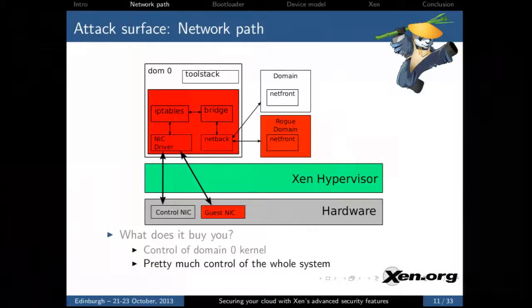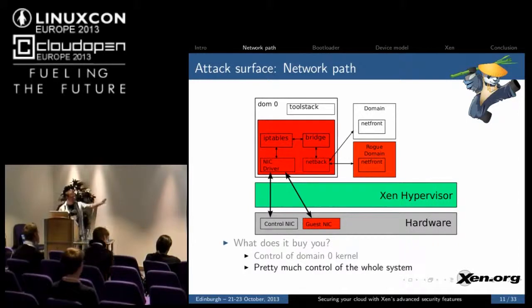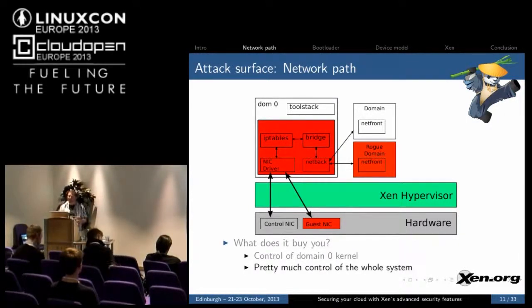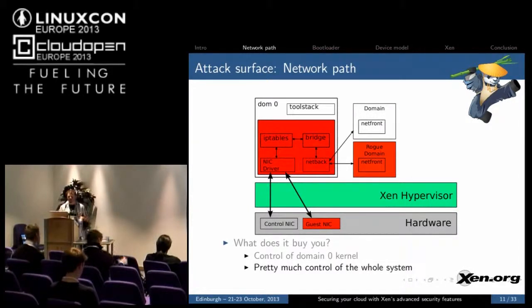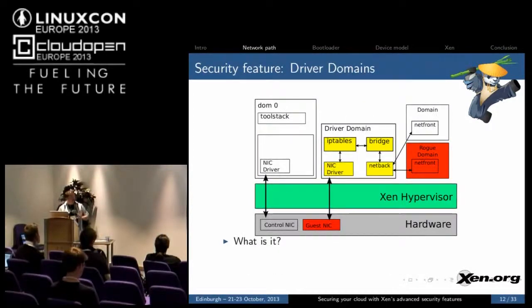This is not just a problem for Xen. Any virtualization technology that has these things running in a privileged space — which is most of them, including KVM, Hyper-V, and VMware — is going to have the same basic problem. So the problem is not unique to Xen, but the solution is.